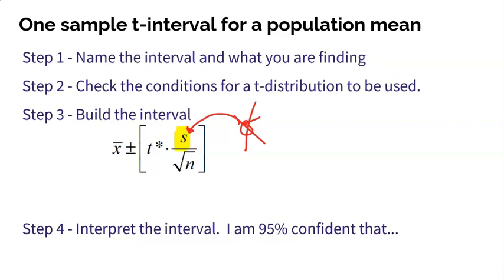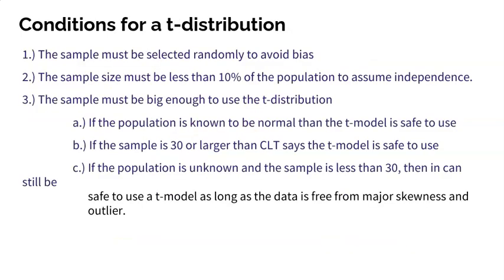Let's look at those conditions very briefly, because this is really important. Those conditions are something you don't want to overlook. First condition is pretty simple. The sample has to be random to avoid bias. Second condition is that sample size must be less than 10% of the population to assume independence. And the third is that the sample needs to be big enough to use that t-distribution.